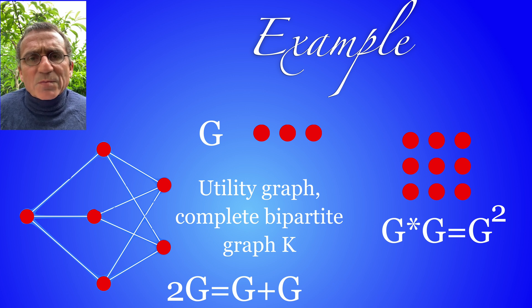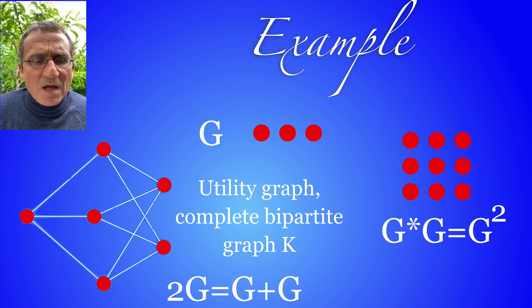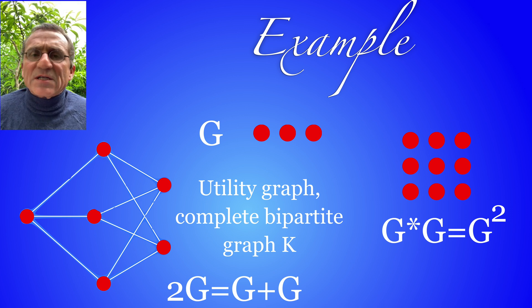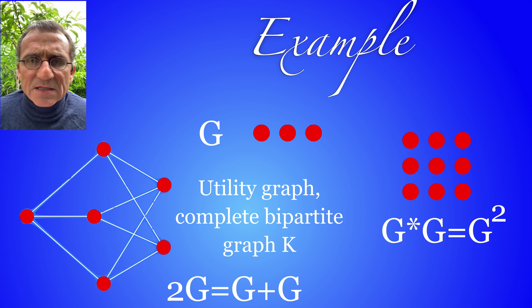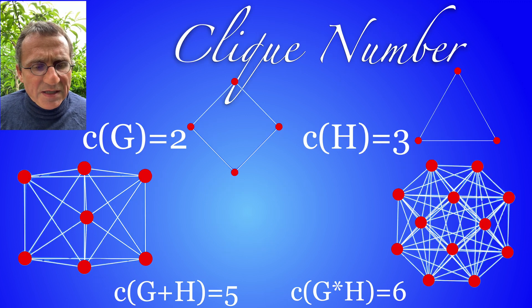For the sum of products of graphs without edges we get complete multi-partite graphs like the utility graph if you add this graph with three vertices and no edge. And if you take the product we also remain in that class of graphs without edges.